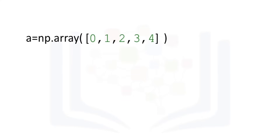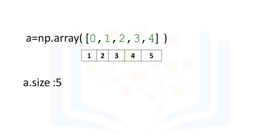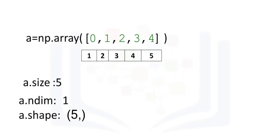Let's review some basic array attributes using the array A. The attribute size is the number of elements in the array. As there are five elements, the result is five. The attribute ndim represents the number of array dimensions, or the rank of the array — in this case, one.